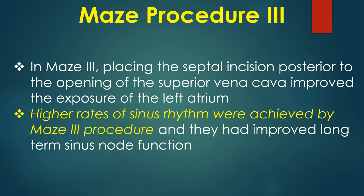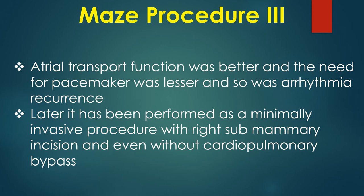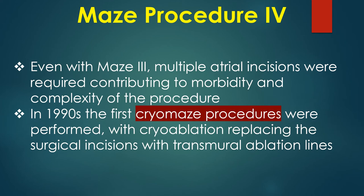In Maze 3, placing the septal incision posterior to the opening of the superior vena cava improved exposure of the left atrium. Higher rates of sinus rhythm were achieved by Maze 3, with improved long-term sinus node function. Atrial transport function was better, the need for pacemaker was lesser, and so was arrhythmia recurrence. Later it was performed as a minimally invasive procedure with right submammary incision and even without cardiopulmonary bypass. Even in Maze 3, multiple atrial incisions were required, contributing to morbidity and complexity.